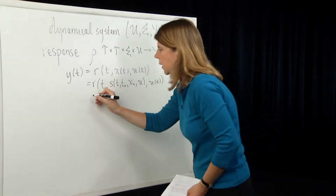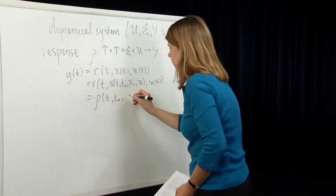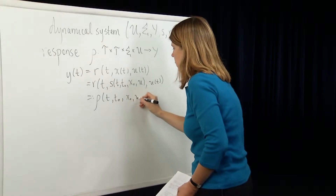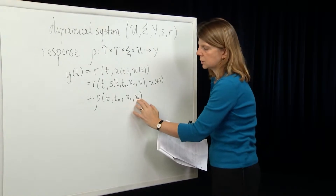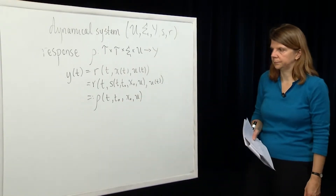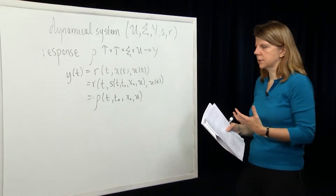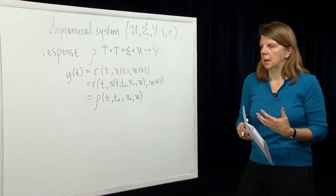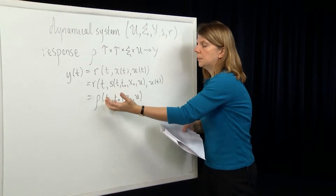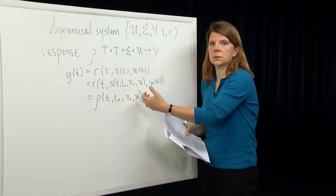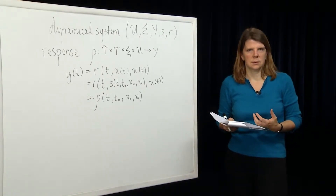This is what we define as the response map: rho of t, t0, x0, and u, where u is the input function between t0 and t. We define this response map because it relates to the output of the system and also contains the dynamics of the system. Typically in a practical system, we're interested in the input-output properties of that system.